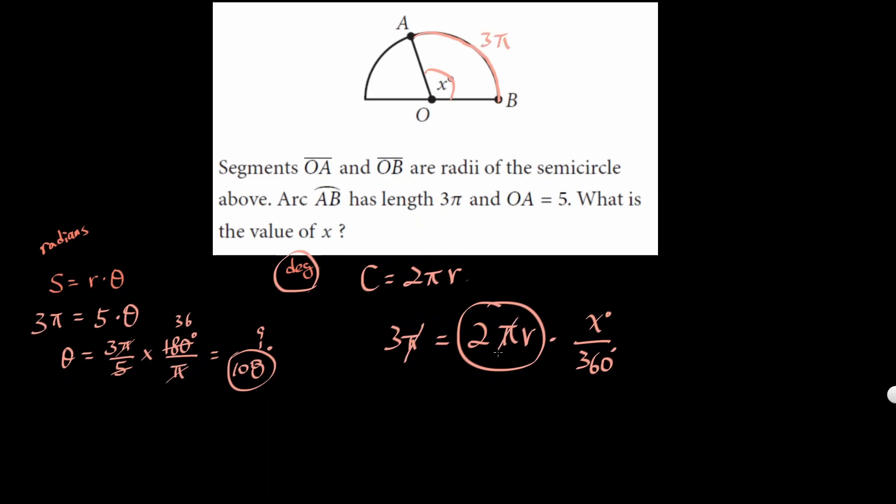So π's cancel. Let's plug in what we know. So 3 equals 2 times radius, which is 5, so that becomes 10, times x degrees over 360. Now since this is 10, 10 cancels with one of the zeros here, and then multiply by 36 on both sides. We're gonna get the same thing, so x will equal 108 degrees.